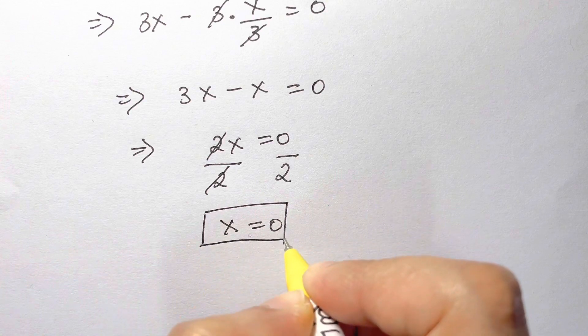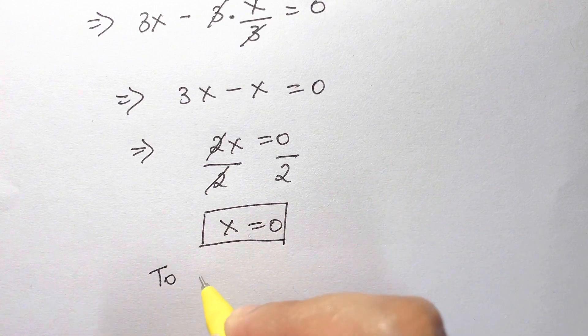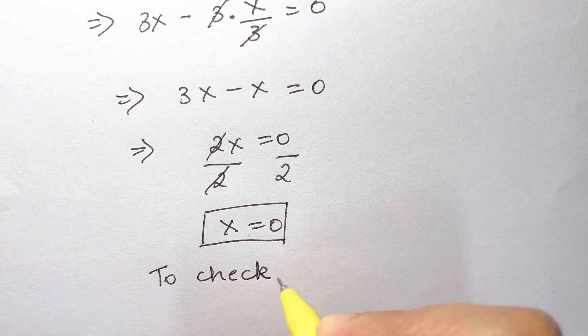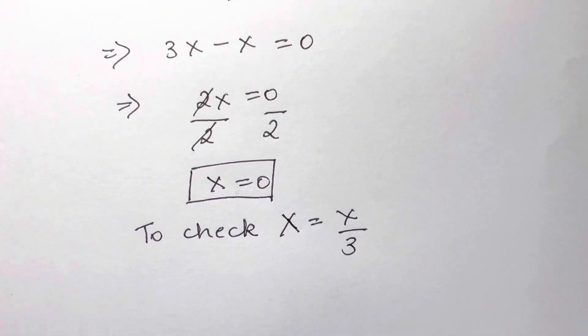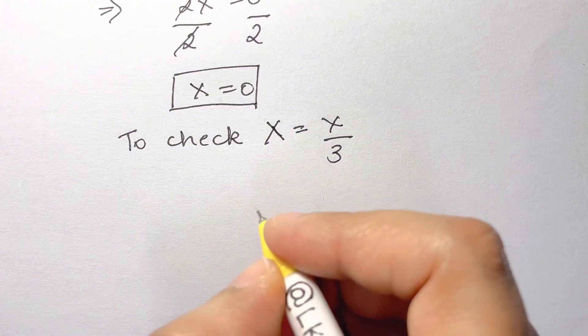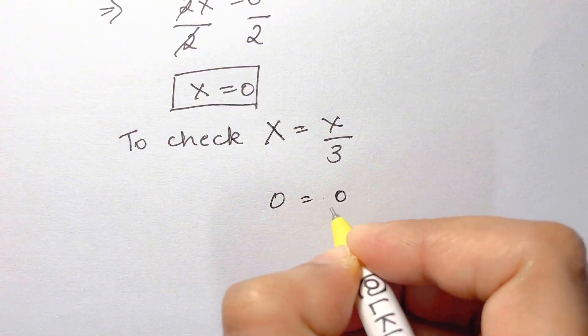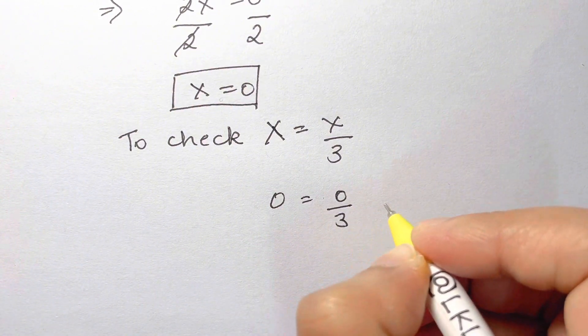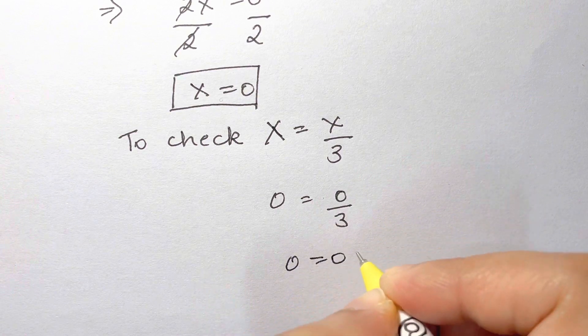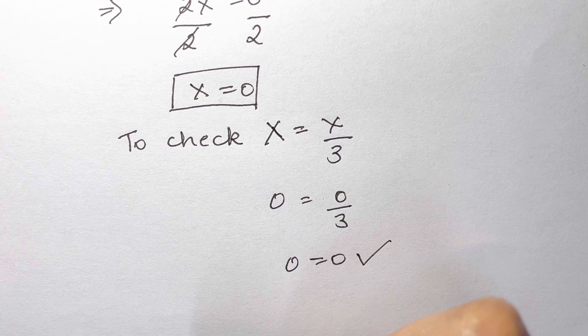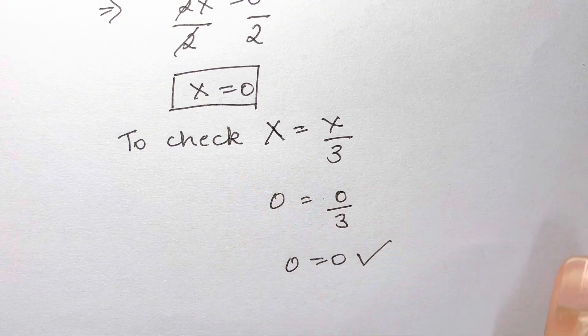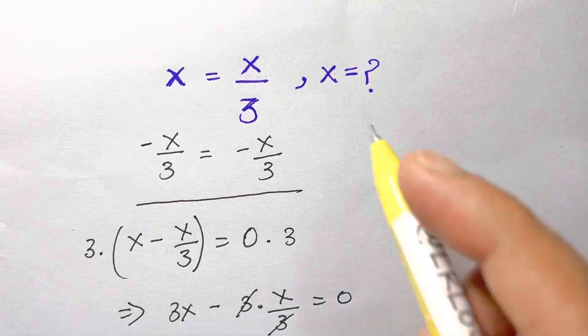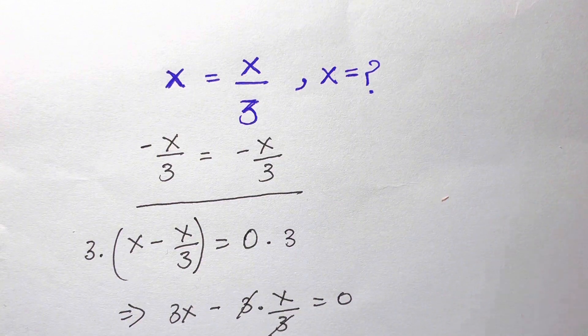Let's check if this is right or not. To check, we have x equals x over 3. So when you're checking, 0 is equal to 0 over 3, and 0 over 3 is 0. That's absolutely right, so this value of x equals 0 satisfies this equation x equals x over 3. Thank you so much, bye.